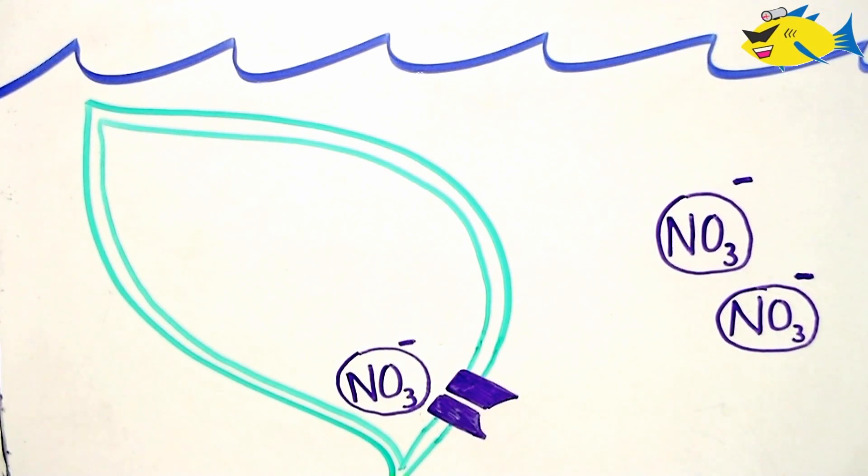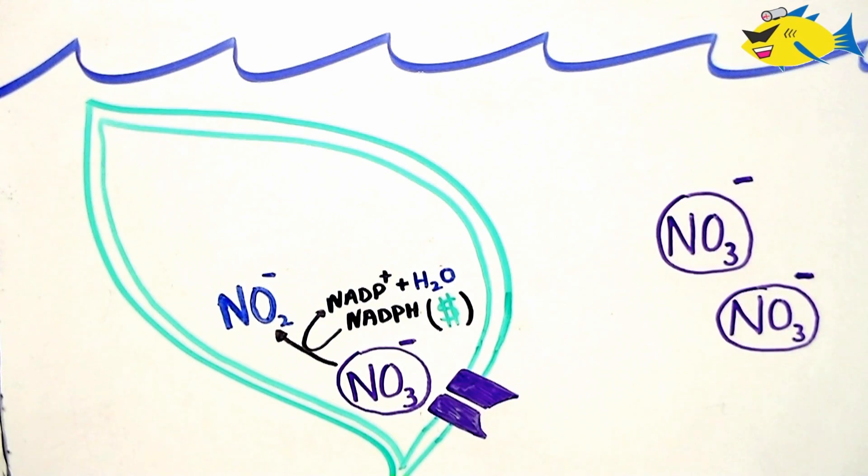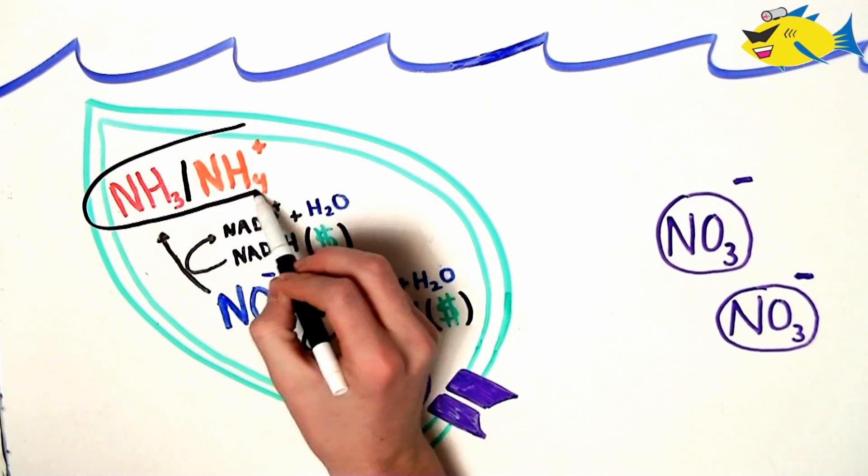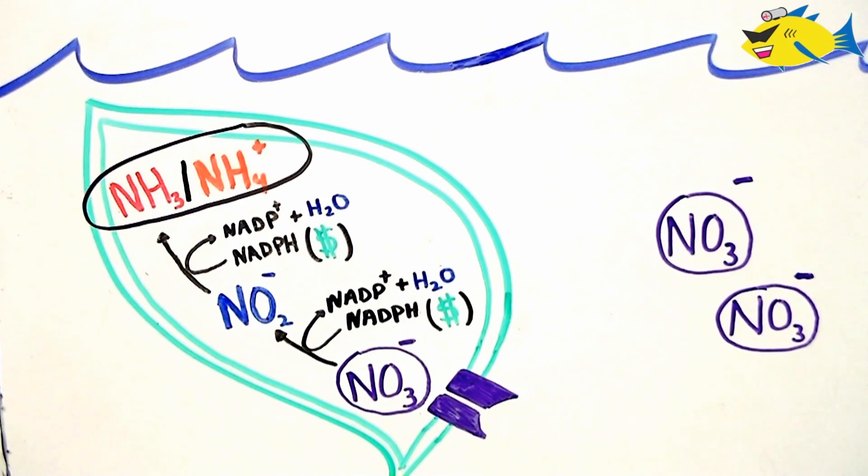However, using this form of nitrogen costs the cell energy because it first must be biochemically reduced back to ammonia, which is the main precursor in a process called nitrogen assimilation, where the plant synthesizes new nitrogen-based compounds such as amino acids.